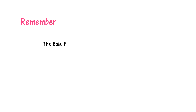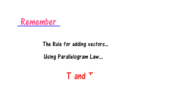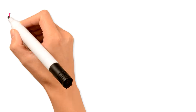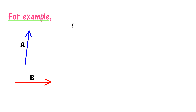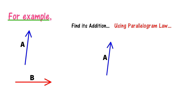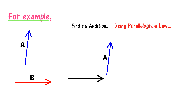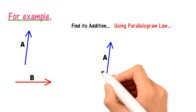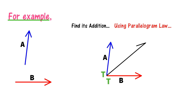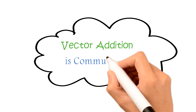The rule for adding vectors using the parallelogram law is the tail-and-tail (T&T) rule. For example, if I have two vectors a and b, I take vector a, then take vector b and join the tail of vector b with the tail of vector a — not the head. The tail of the resultant vector is also joined with the tails of vector a and vector b, giving the resultant a plus b.